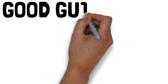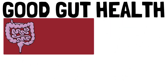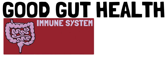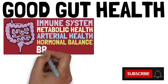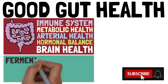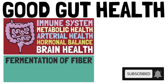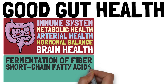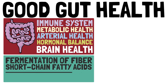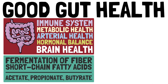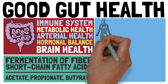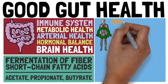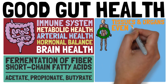Our gut plays a central role in our immune system, metabolic health, arterial health, hormone balance, and even brain health. The fermentation of dietary fiber produces short-chain fatty acids. The three most common short-chain fatty acids are acetate, propionate, and butyrate. These short-chain fatty acids circulate in our bodies, affecting practically every tissue and organ, including the brain.